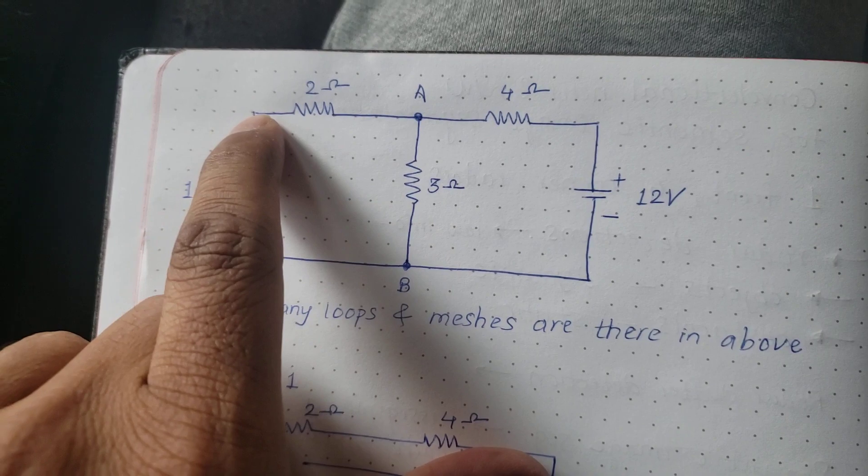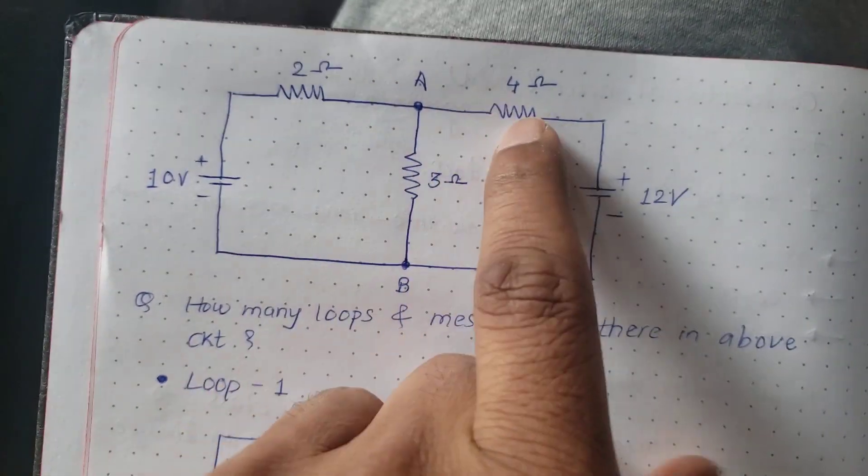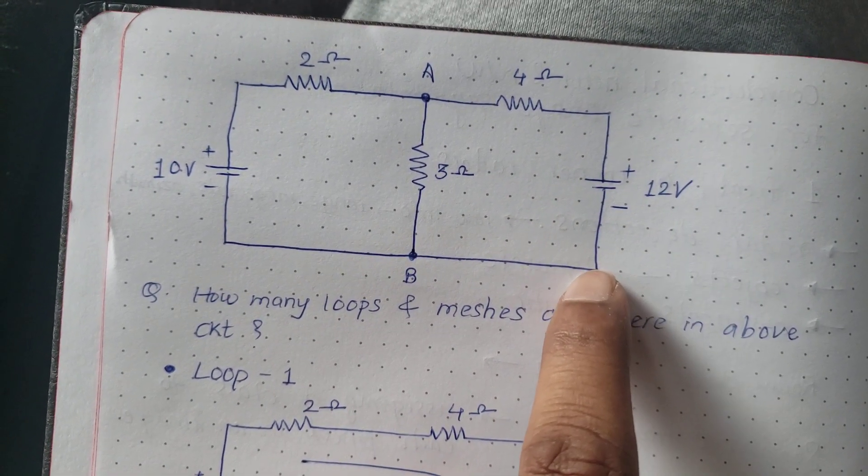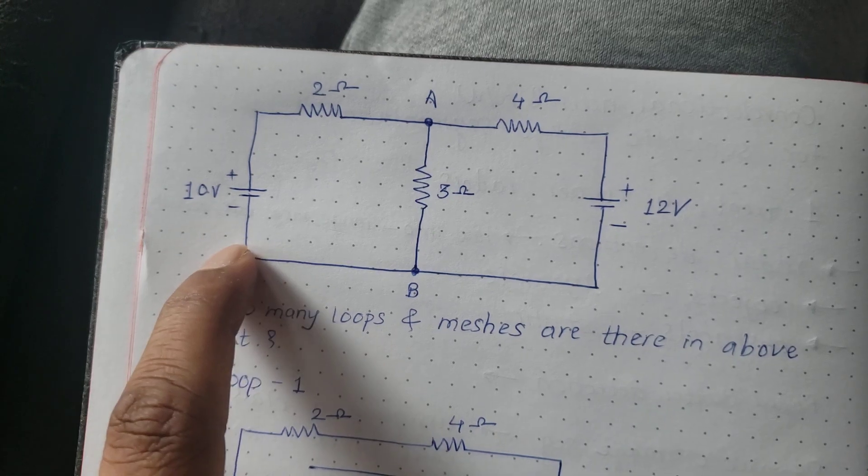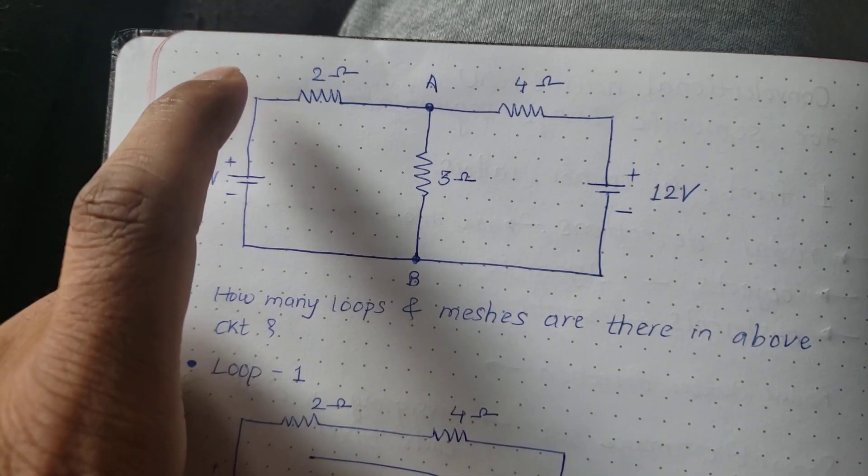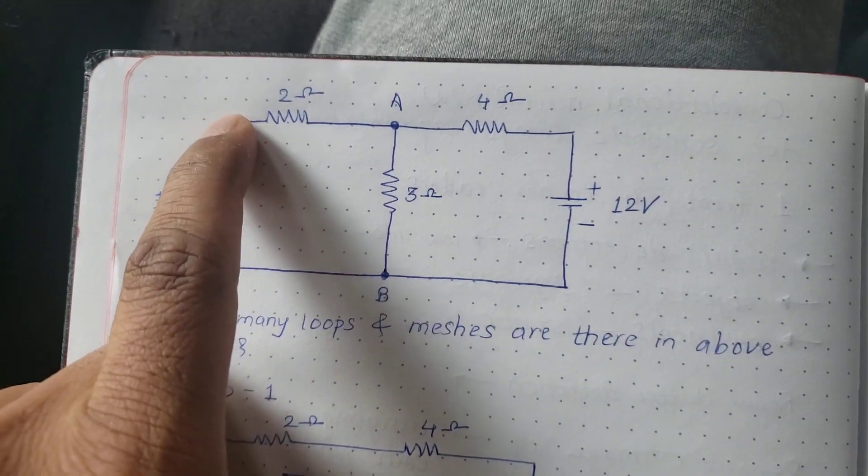If we start from here, two ohms, node A, four ohm resistance, 12 volt battery, and then 10 volt battery, and I am closing this. So I am starting from here and ending here.